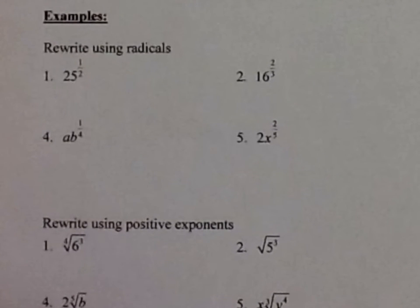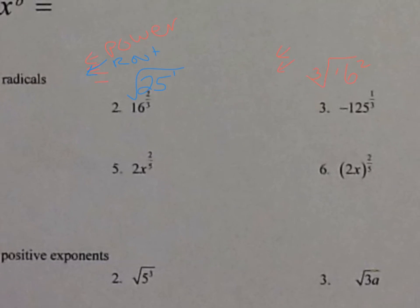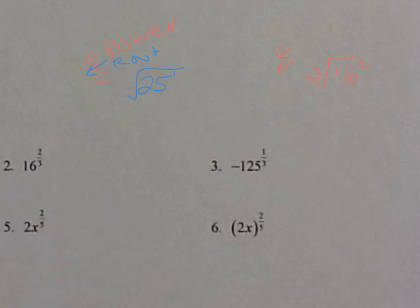Example 1: 25 to the one-half power — the numerator 1 is the power, the denominator 2 is the root, so it equals the square root of 25. Example 2: 16 to the two-thirds power — the numerator 2 is the power, denominator 3 is the root, so it's the cube root of 16 squared.